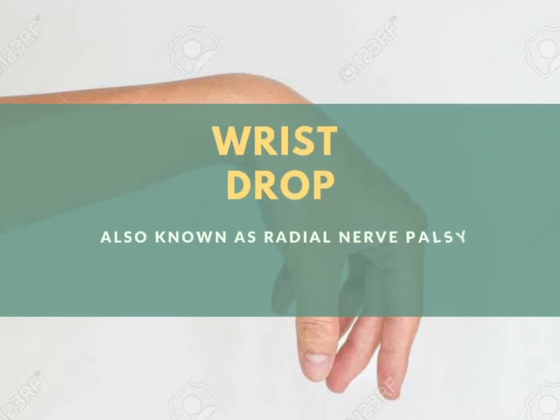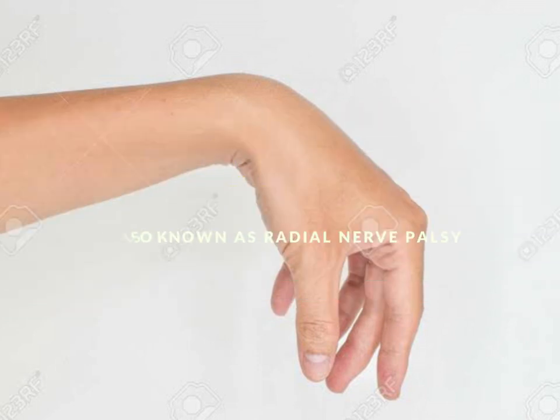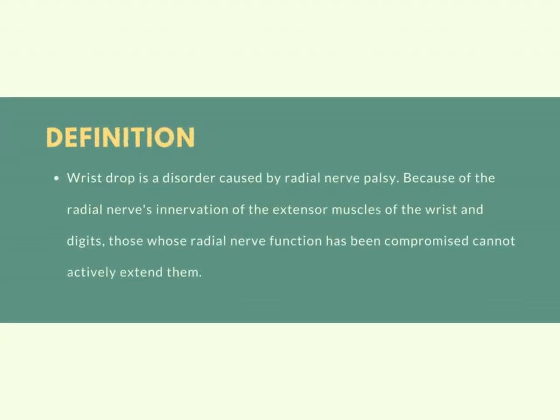This video is about wrist drop, also known as radial nerve palsy. According to the definition, wrist drop is a disorder caused by radial nerve palsy. Because of the radial nerve's innervation of the external muscles of the wrist and digits, those whose radial nerve function has been compromised cannot actively extend their hand.